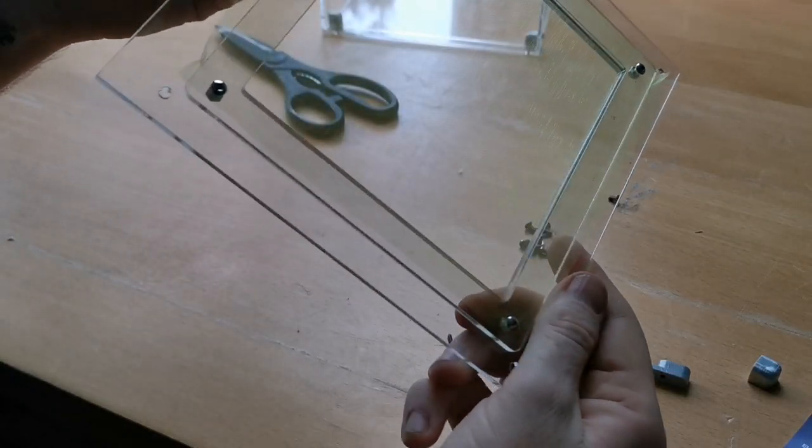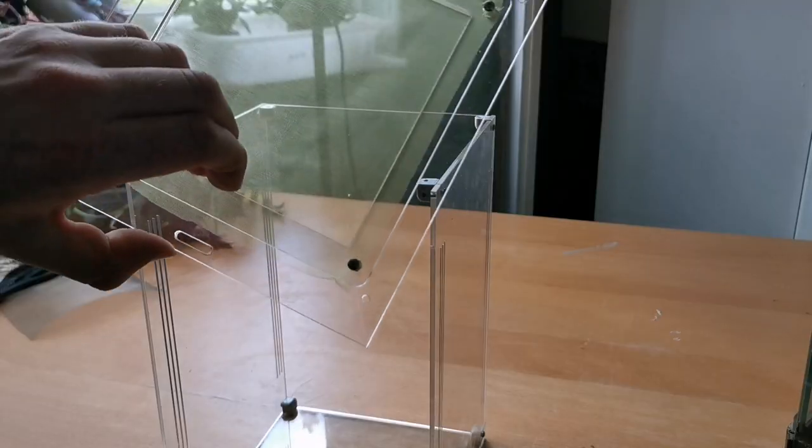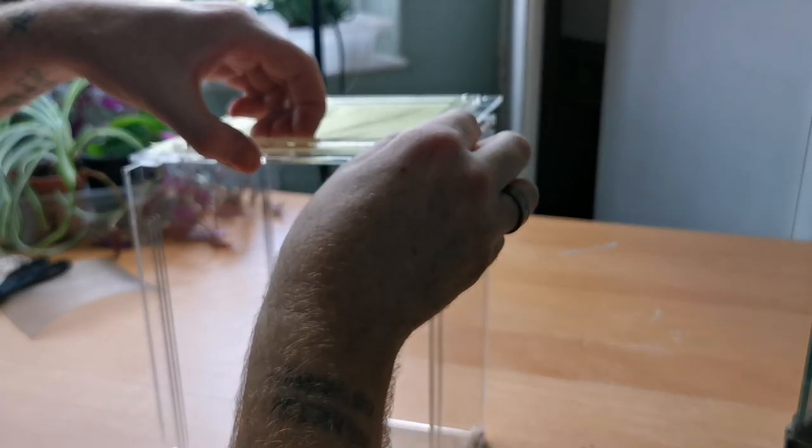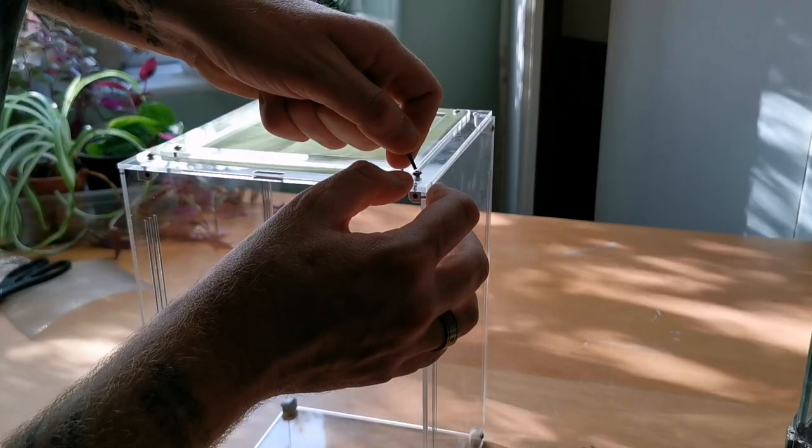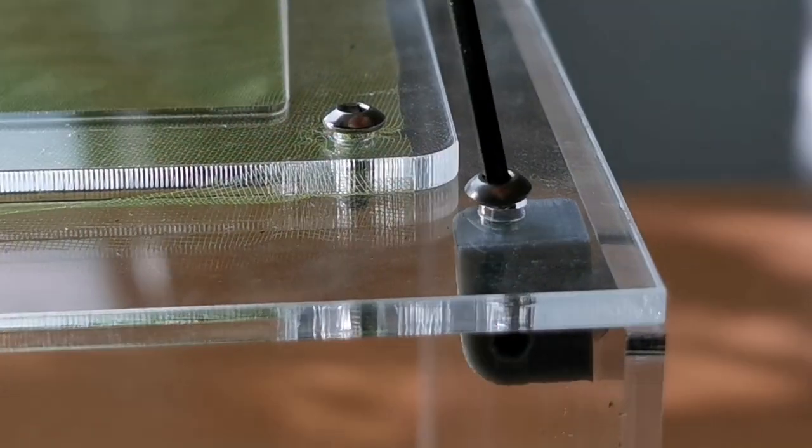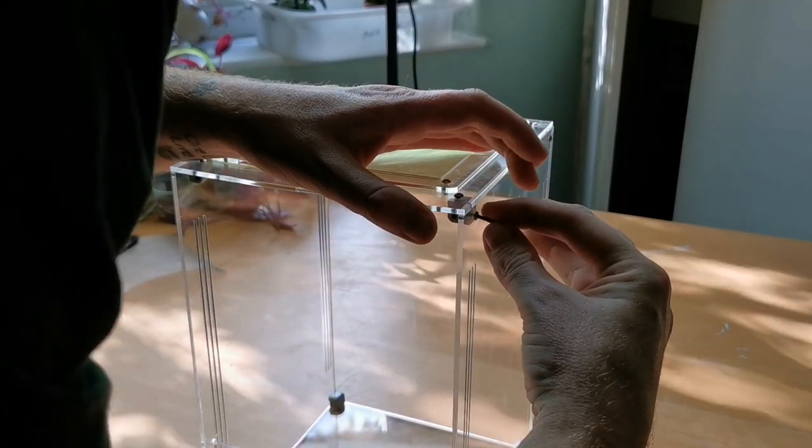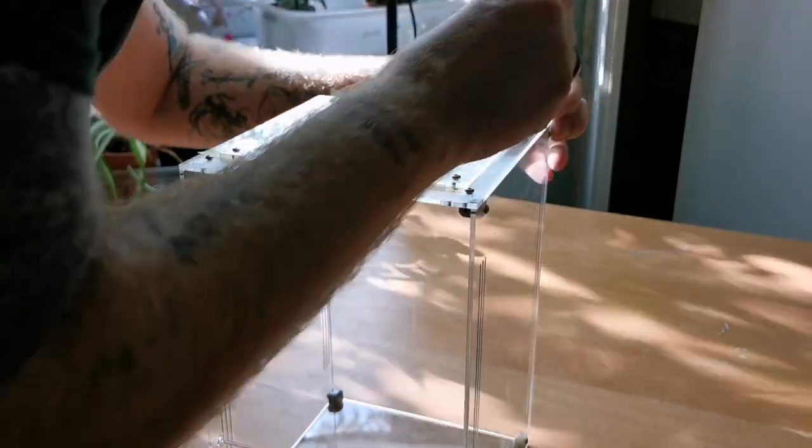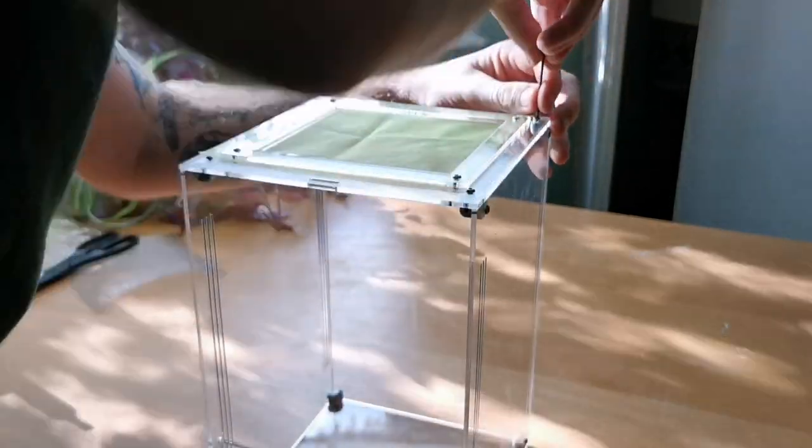Then it's time to fasten this top onto the enclosure. You want to open the door, make sure you've got the slot at the front of the enclosure and then secure it to the top using the little screws provided. The next step, which is not the final step, you just want to go around every single screw with the allen key and just double check everything is nice and tight.